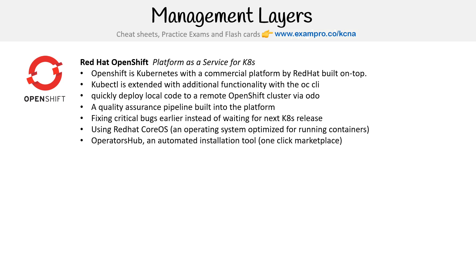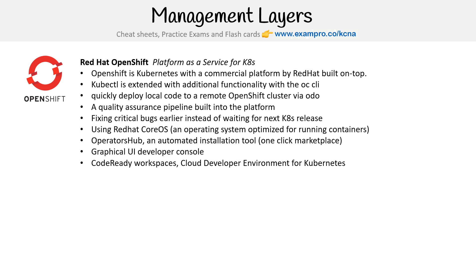That's really why people pay for it — to make sure everything's patched and good. The platform utilizes Red Hat CoreOS, an operating system optimized for running containers. Operator Hub is an automated installation tool for a one-click marketplace. They also have a graphical UI for developer consoles, and Code Ready Workspaces — developer environments specific to Kubernetes — which was really interesting. I didn't end up using it because Red Hat was a pain to sign up for; it couldn't take my Canadian postcode and broke, and I waited a week for them to fix it. But they do have a 30-day trial.